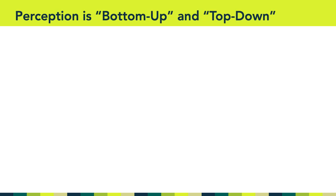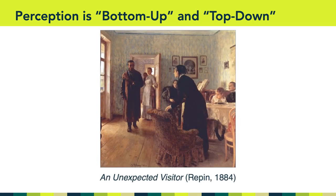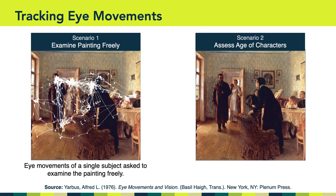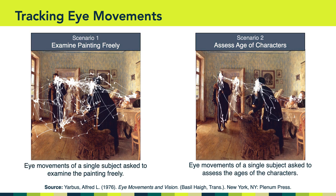I also want to talk about the idea that perception is both bottom-up and top-down. There was an interesting study by Yarbus many years ago, where he and colleagues used an early form of eye-tracking and asked participants to look at a famous painting — but gave subjects different instructions. In one scenario, they examined the painting freely. In the other, they were asked to assess the age of the characters. Looking at the eye movements of a subject asked to examine freely, this is an example of bottom-up processing, where the physical stimuli of the painting drove what the subject looked at.